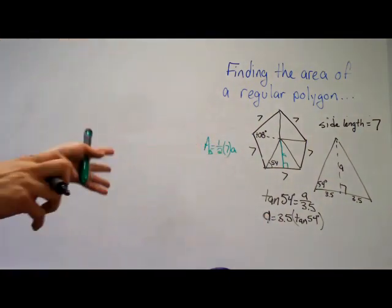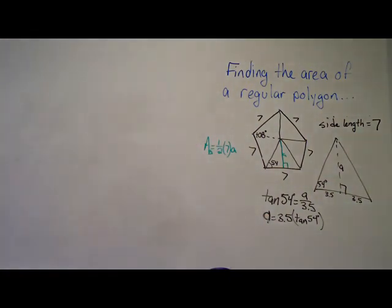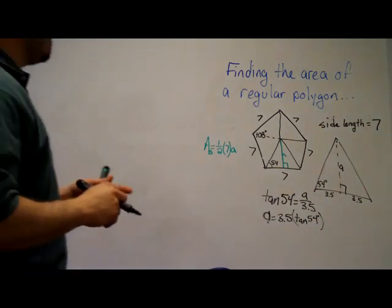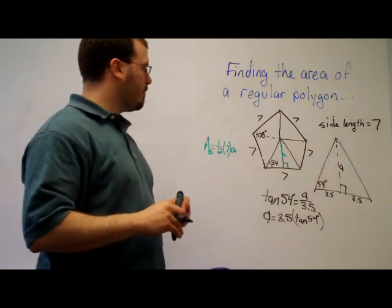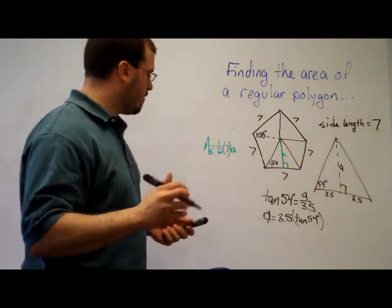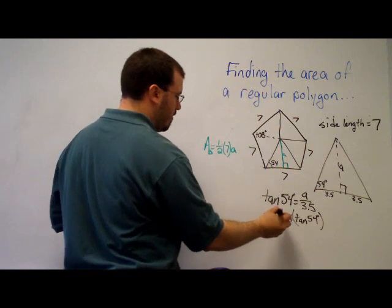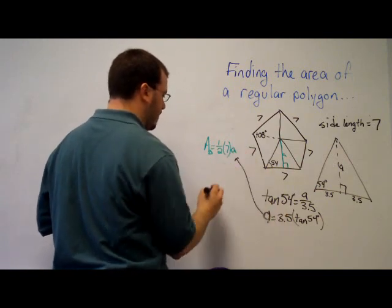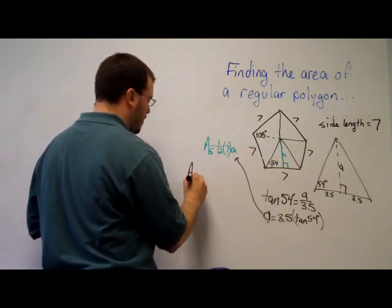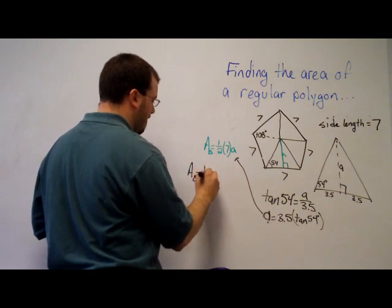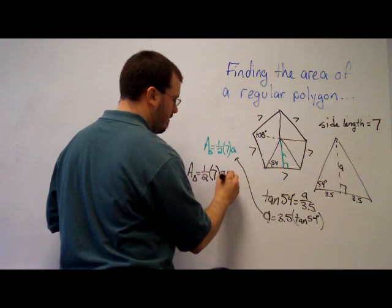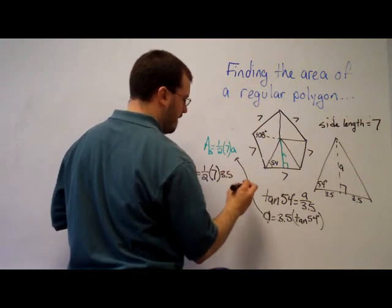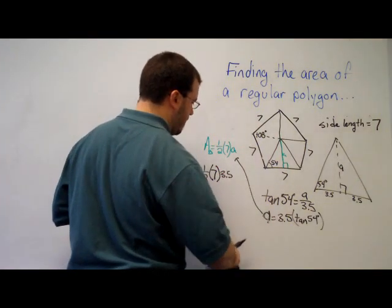So that's the equation that I can type into my calculator to find the apothem. And once I know the apothem, I can substitute it in here. And then I have the area of one triangle. To save having to go to my calculator right now though, I'm just going to substitute it in right here. So the area of one triangle is equal to one half of 7 times 3.5 tangent of 54.